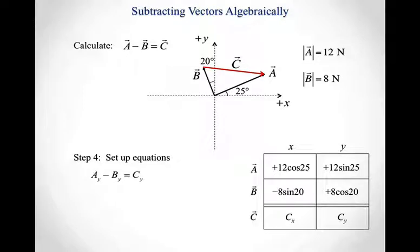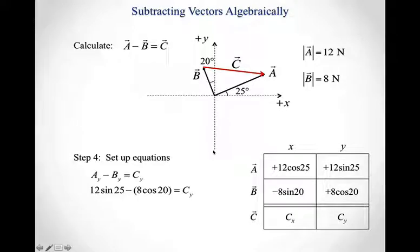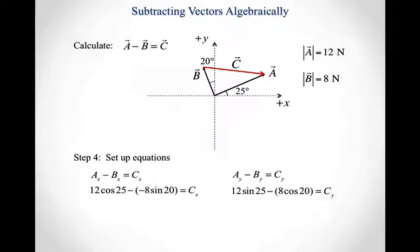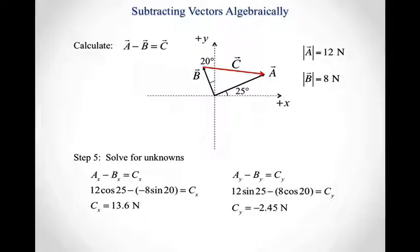Now the y-component equation: the y component of A minus the y component of B equals the y component of C. Using the values from our table, that's 12 sine 25 minus 8 cosine 20 equals the y component of C. We have two equations and our unknowns are the x and y components of vector C. Each unknown has its own equation, so we can calculate directly: the x component of vector C is 13.6 newtons, and the y component of vector C is negative 2.45 newtons.